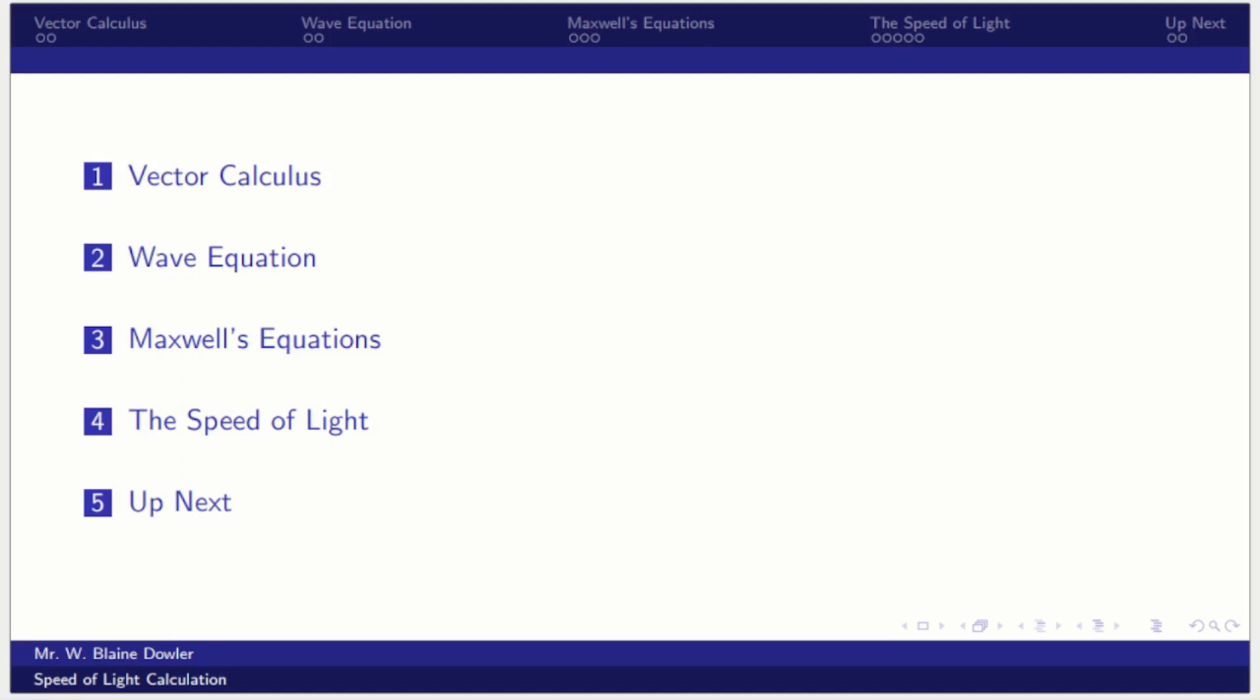So we're going to review some vector calculus symbols, then we're going to look at the universal wave equation. We're going to take a look at Maxwell's equations and then talk about how the speed of light is calculated before we discuss what's coming up next.